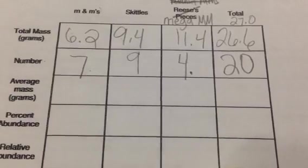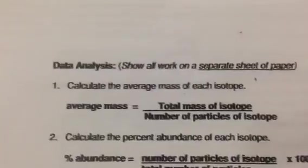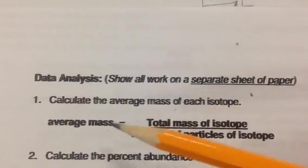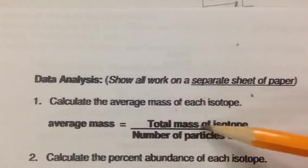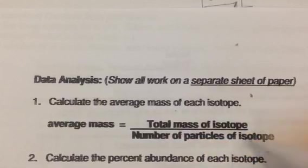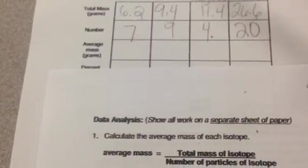So now you're trying to determine the average mass in grams of each of your isotopes. And if you flip your sheet on the back, you will notice that it has formulas for everything you're going to have to do. So you just need to go very methodically through each one. Average mass tells you it is equal to the total mass of the isotope divided by the number of particles in that isotope.